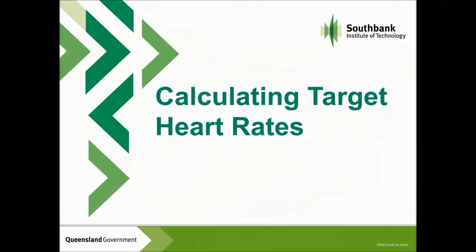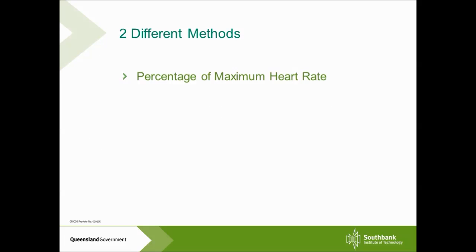Today we're talking about calculating target heart rates. There are two major methods that we can use: one being a fairly simple method called the percentage of maximum heart rate method, and the second one being a slightly more complex but still quite easy method called the heart rate reserve, otherwise known as the Karvonen method.